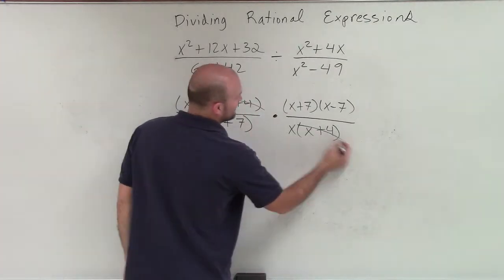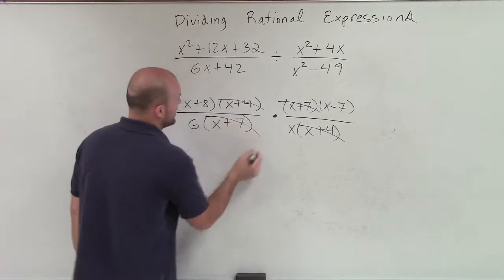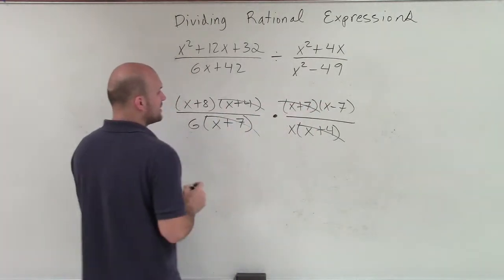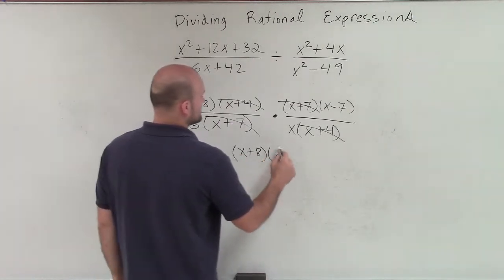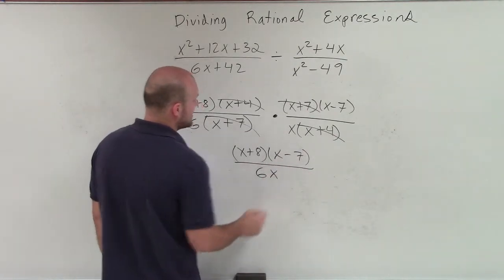So here I have x plus 4 divided by x plus 4. That divides out to 1. Here I have x plus 7 divided by x plus 7. That divides out to 1. So therefore, in my numerator, all I'm left with is an x plus 8 times an x minus 7. And then in my denominator, I'm just left with a 6x.